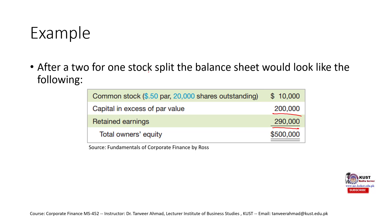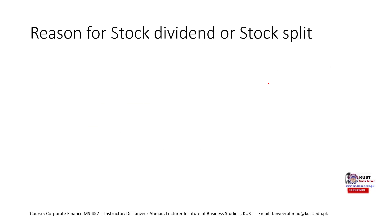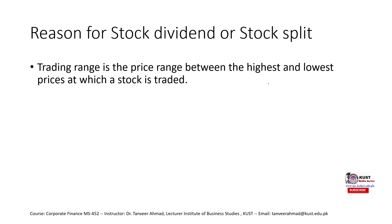In a 2-for-1 stock split, shares outstanding double from 10,000 to 20,000, and the par value is halved from $1.00 to $0.50. The capital in excess of par value and retained earnings remain unchanged. Total owner's equity stays the same. This is purely an accounting adjustment — unlike a stock dividend, no amounts are transferred between accounts. Whether it is a stock dividend or a stock split, there is no effect on the actual worth of shareholders.